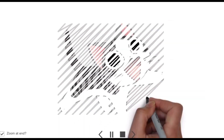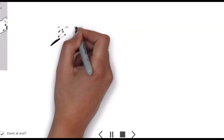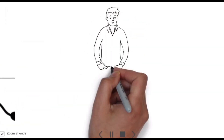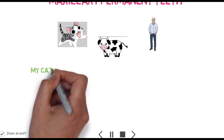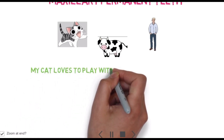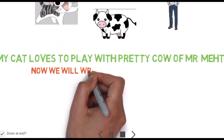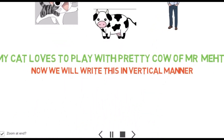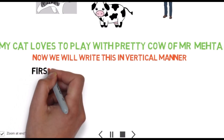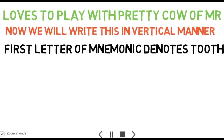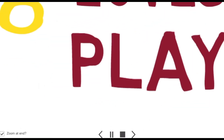So we have a cat, a cow, and Mr. Mehta. Our mnemonic is: My Cat Loves To Play With Pretty Cow Of Mr. Mehta. For ease, I will write this in a vertical format, and the first letter of each word in the mnemonic denotes the tooth. Writing it: 'My Cat Loves To' is written on the side, 'Play With' is written inside.